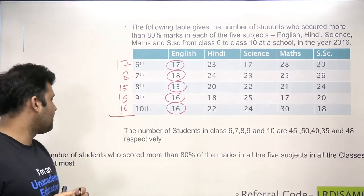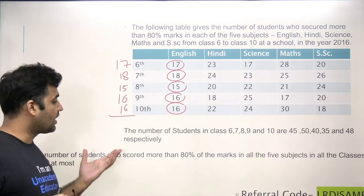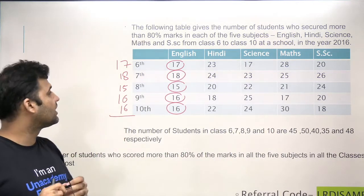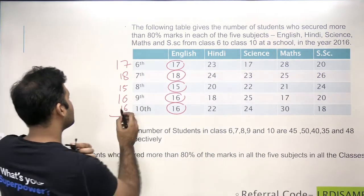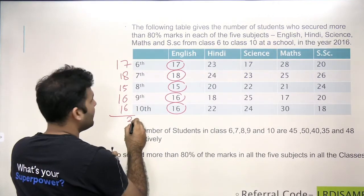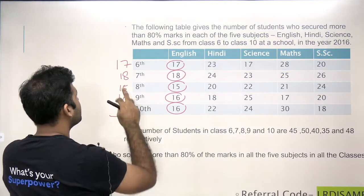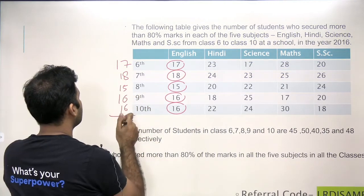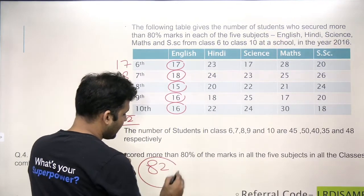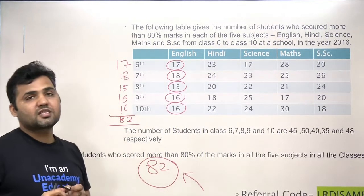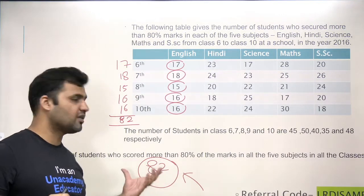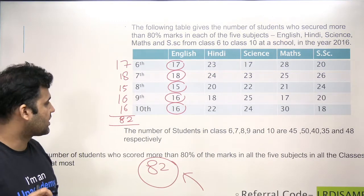Therefore, the maximum number of students getting more than 80% in all five subjects is the sum of all these minimum values across classes. Adding: 6+6=12, plus 5=17, plus 8=25, plus 7=32, and the remaining 3+1=4, 5, 6, 7, 8 — total is 82. So 82 is the answer: across all classes combined, the maximum number of students getting more than 80% in all five subjects is 82.